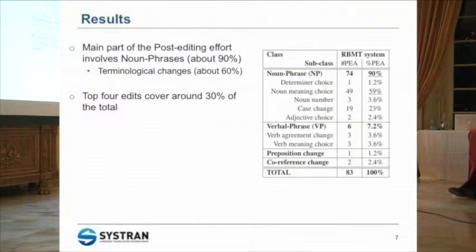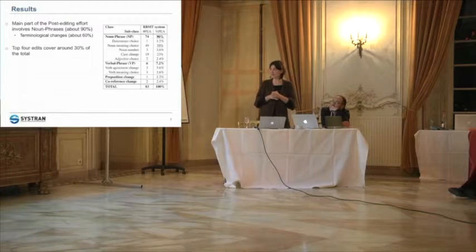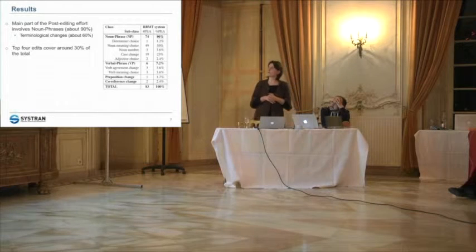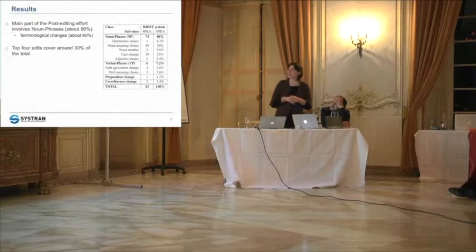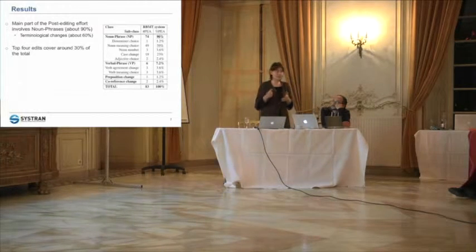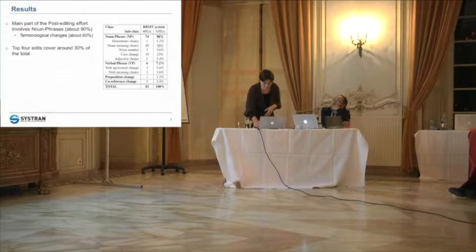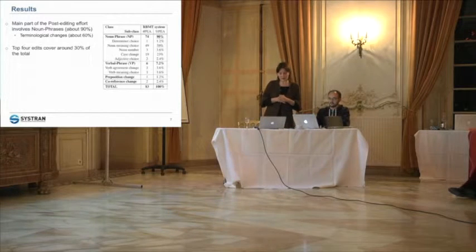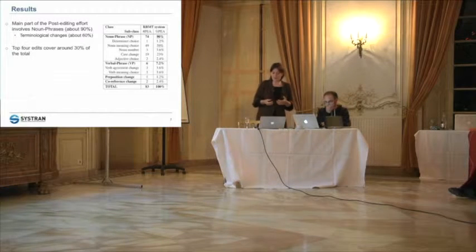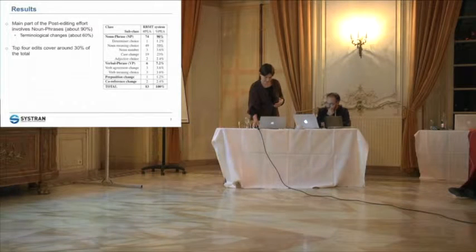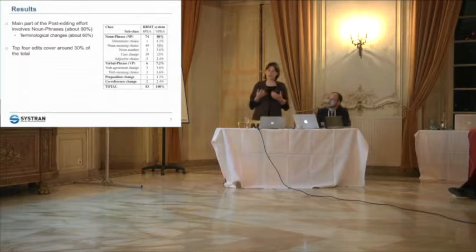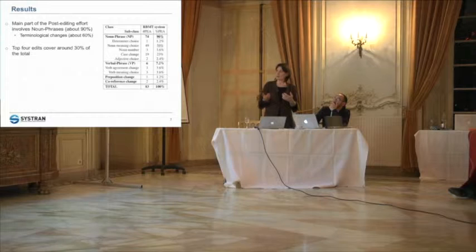The table sums up the different errors observed. The main part of the post-editing effort involves noun phrases — about 90% — and 60% of these noun phrase changes were about terminological changes. Another interesting finding is that the top four edits already cover 30% of the total, which means that if you correct the top four you already significantly improve quality. Based on this, we now want to automate the error categorization process.